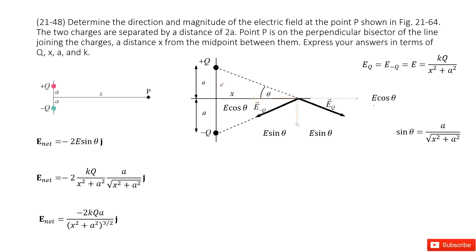You can see the distance squared. So we look at this triangle. The distance squared equals a squared plus x squared. So you can see this E equals k times q divided by x squared plus a squared.